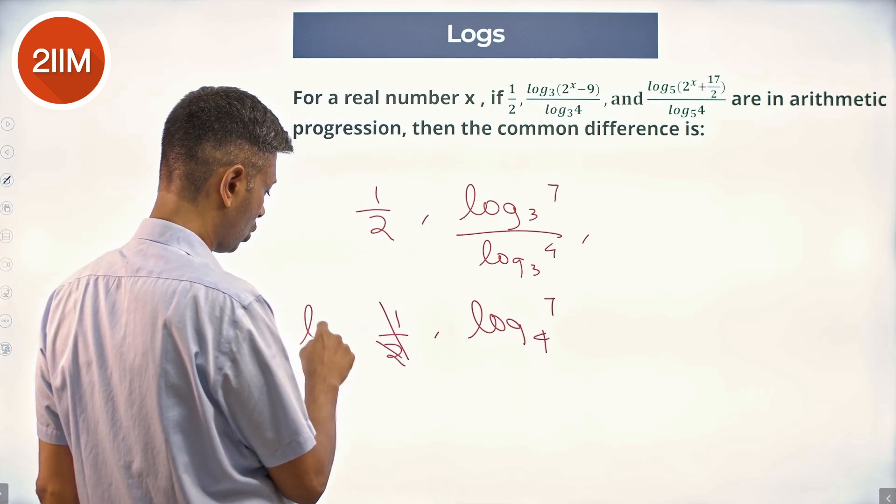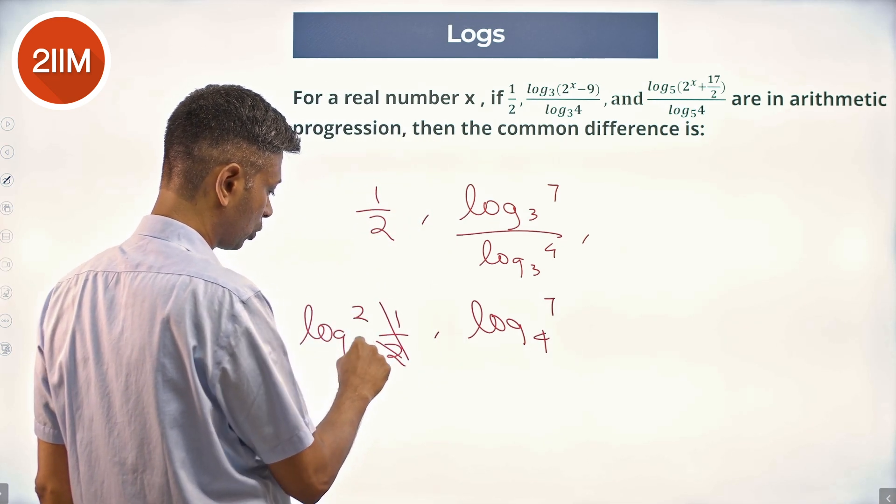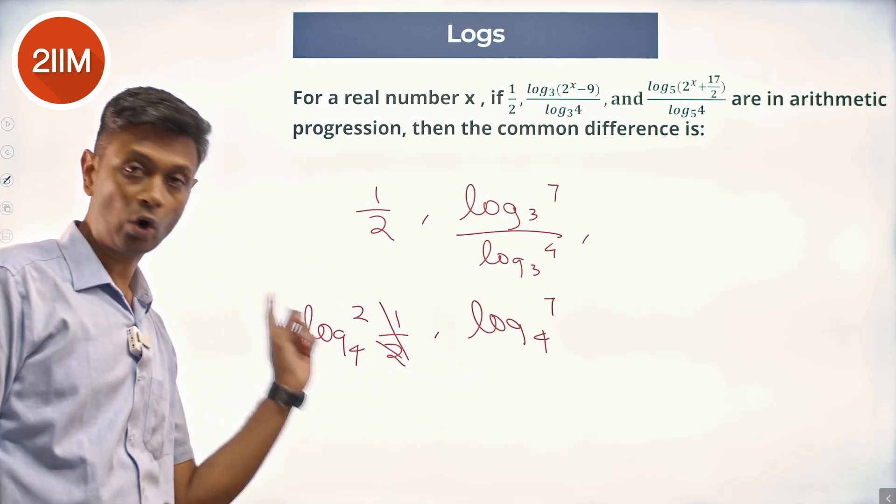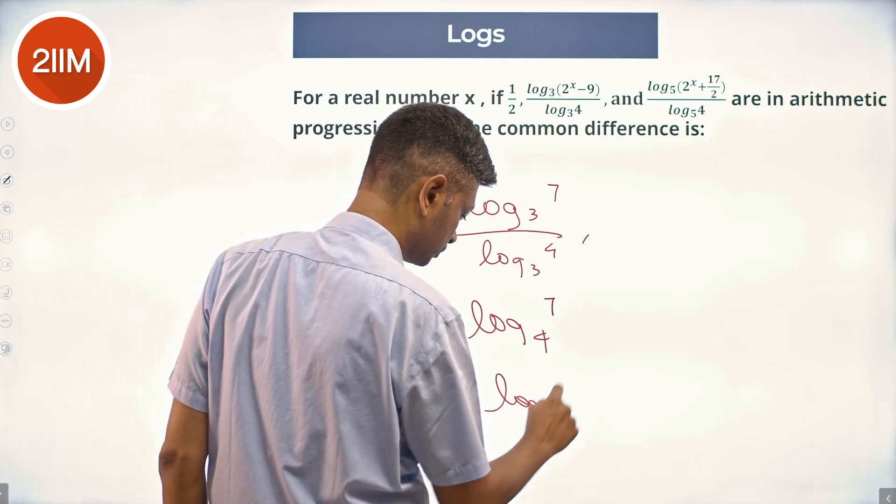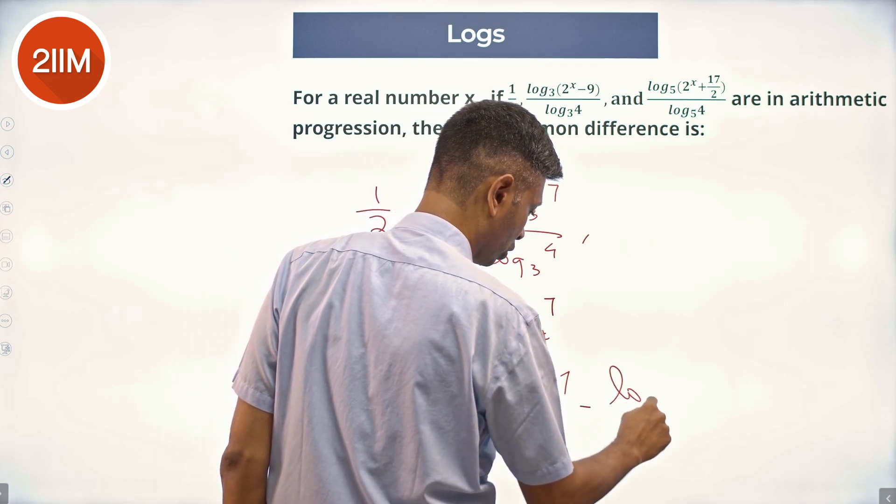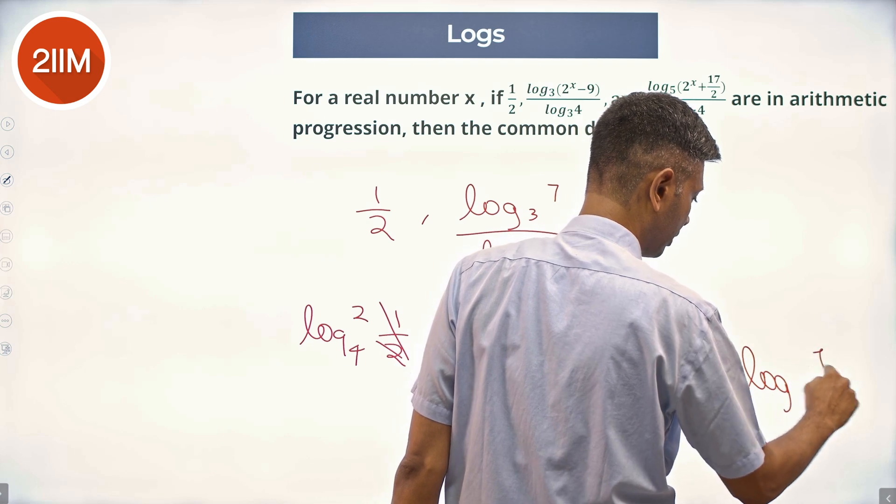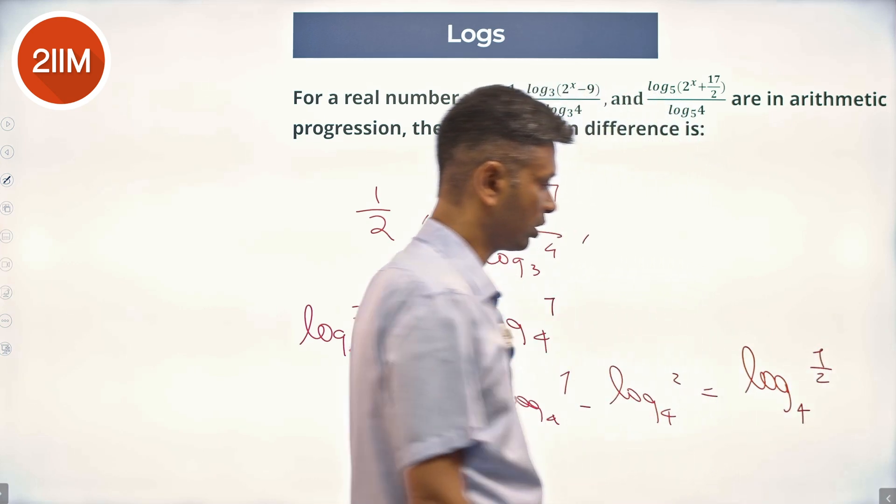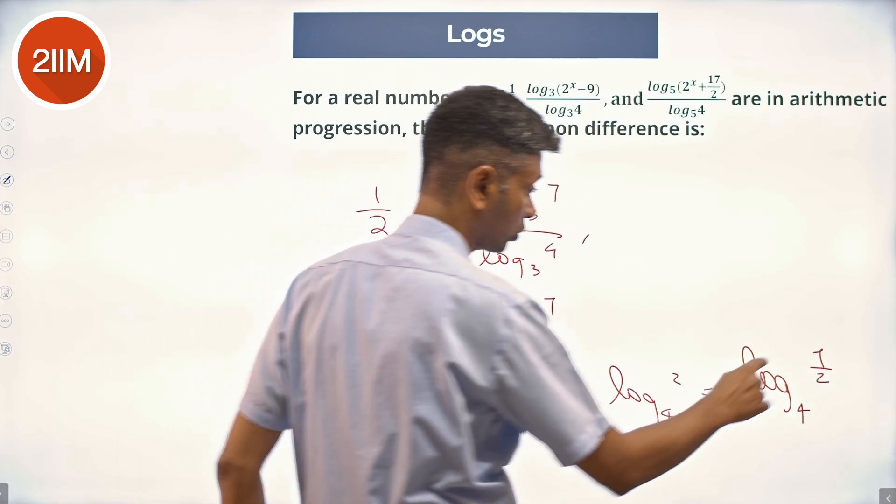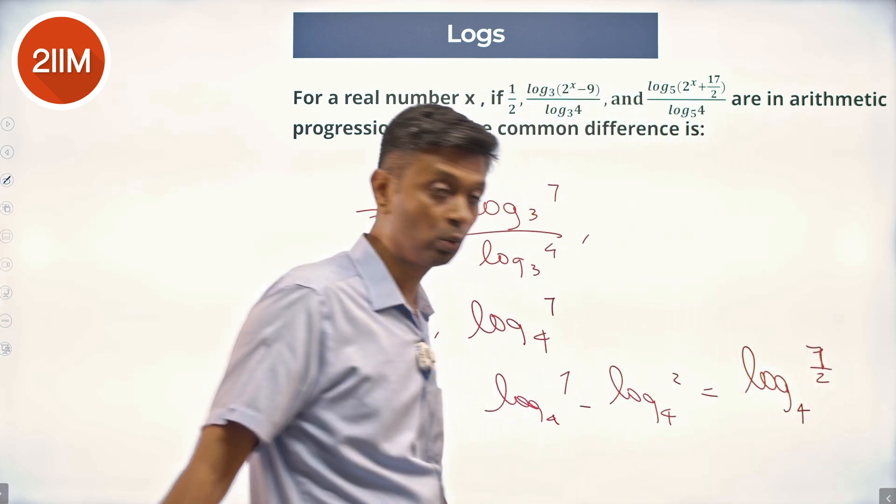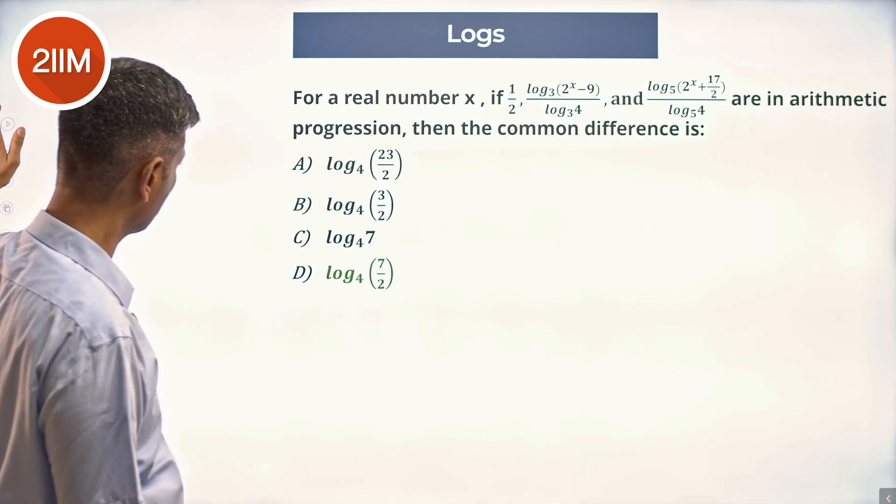This I can write as log₄(2). This minus this is the common difference. So log₄(7) - log₄(2), which is log₄(7/2). That is the common difference. This is 7 even though it looks weird. 7/2 to the base 4 is the common difference. Hopefully that's among the choices. Indeed it is.